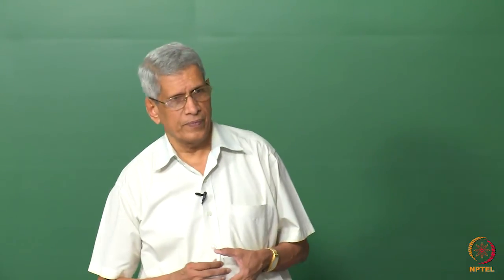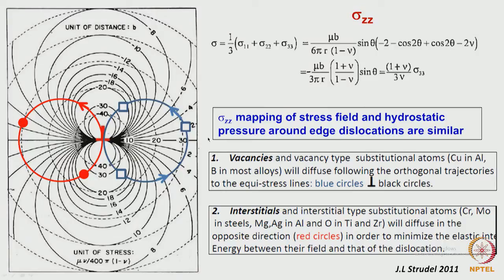Plotting this stress: the equicontour plot shows negative values above the slip plane (compressive) and tensile stress below. This is qualitatively similar to the sigma_xx plot, but the equistress contours are circles tangent at the dislocation line, whereas for sigma_xx the contours have different shapes.